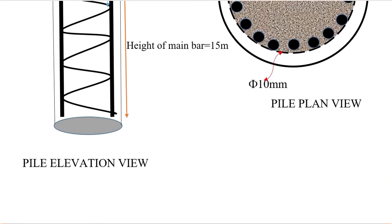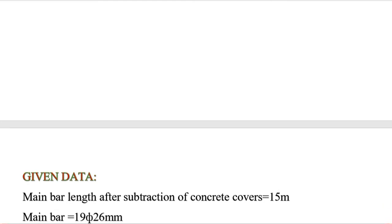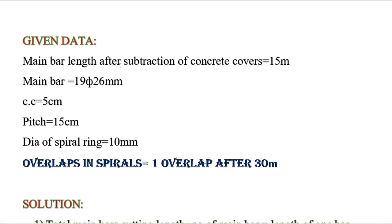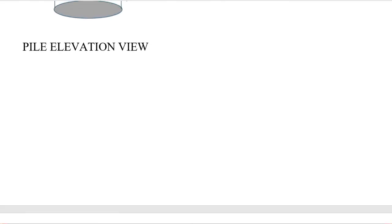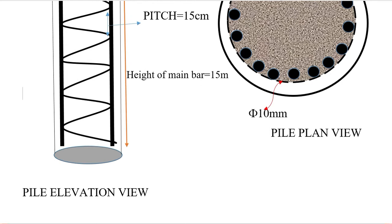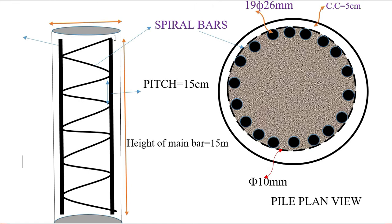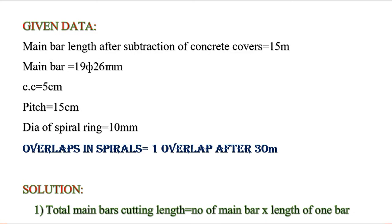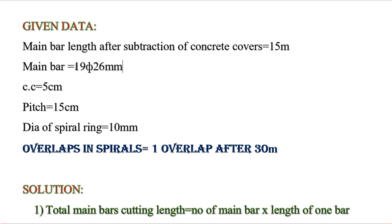Let's solve this numerical for better understanding. Given data: main bar height is 15 meter without concrete cover. Number of main bars is 19, diameter of main bar is 26 millimeter — you can learn how to read the triangle notation which indicates 19 bars of dia 26 millimeter. Concrete cover is 5 centimeter and pitch of the spiral ring is 15 centimeter.